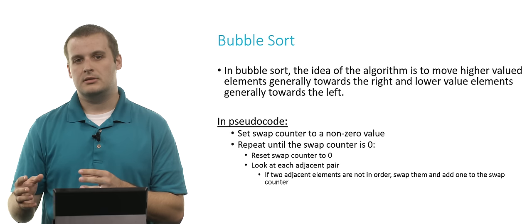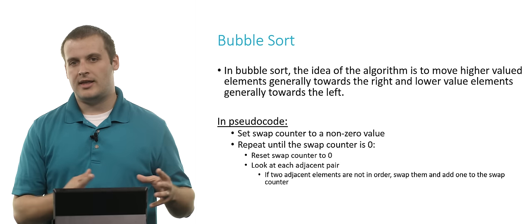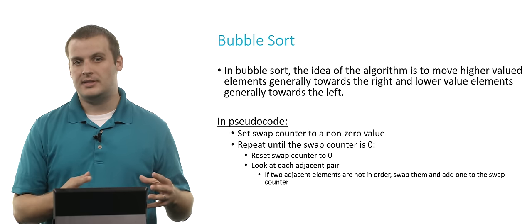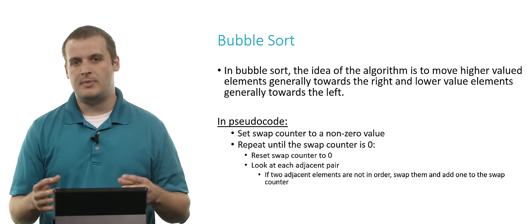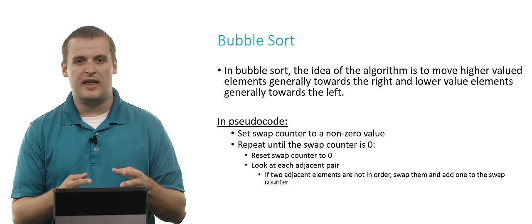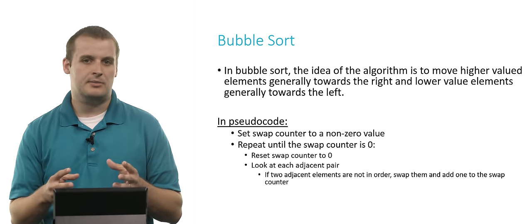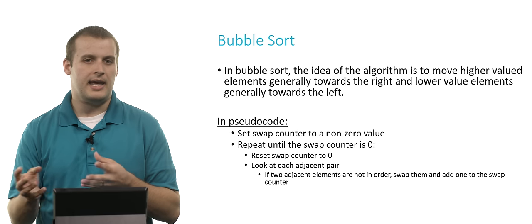Bubble sort is an algorithm we can use to sort a set of elements. The basic idea behind bubble sort is this: we want to move higher valued elements generally to the right and lower valued elements generally to the left. We want the lower things to be at the beginning and the higher things to be at the end.